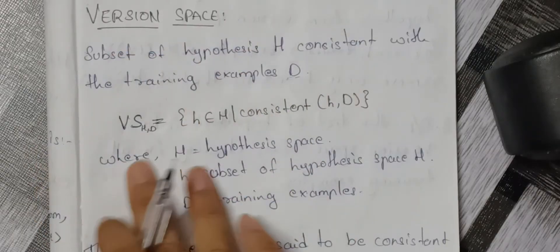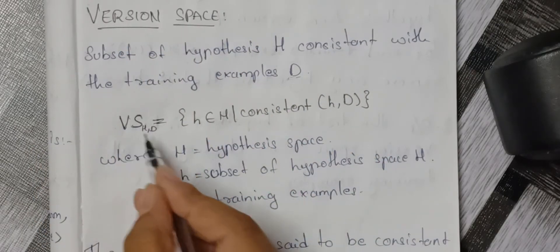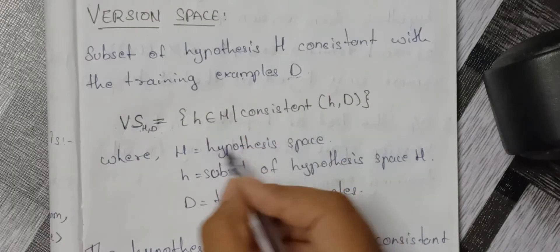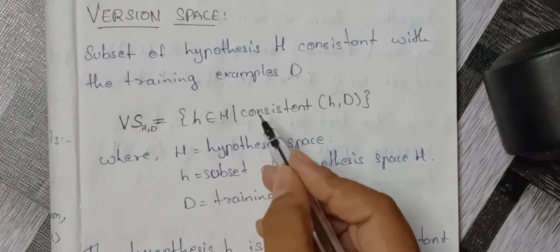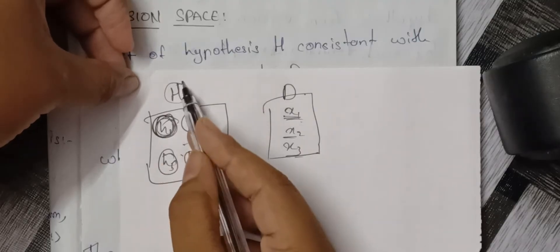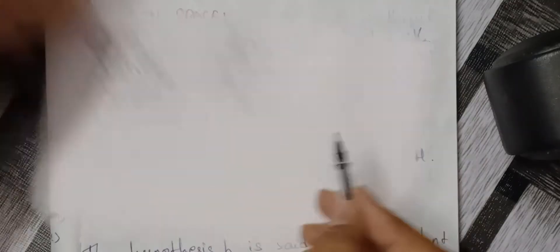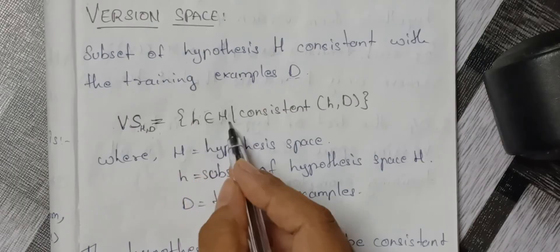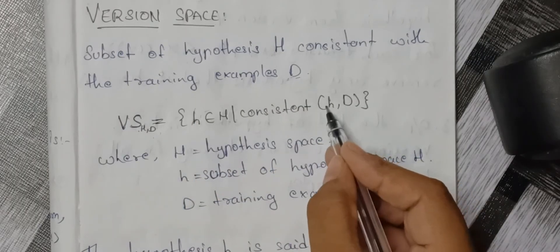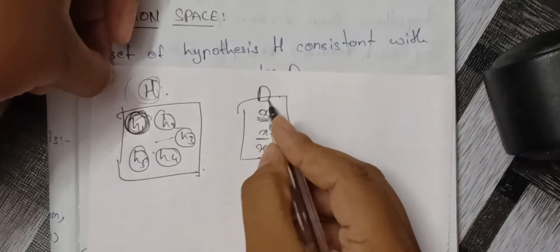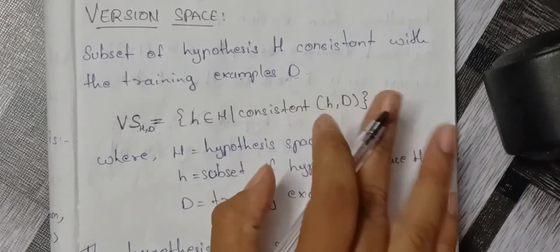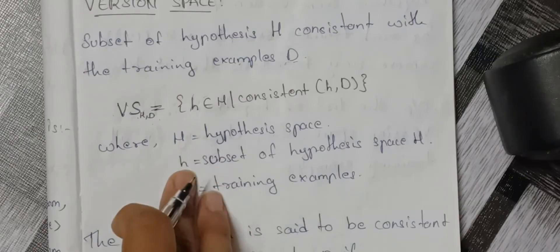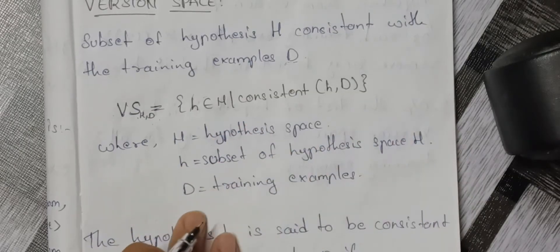We represent this formally as VS(H, D), where VS stands for version space, H is the hypothesis space, and D represents the training examples. Small h belongs to capital H as a subset, and small h must be consistent with the training examples D. So small h is a subset of capital H and is consistent with D.